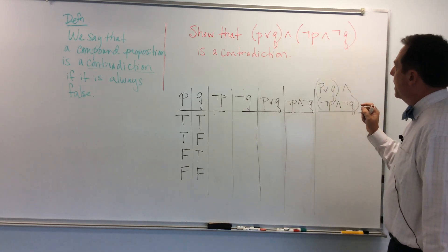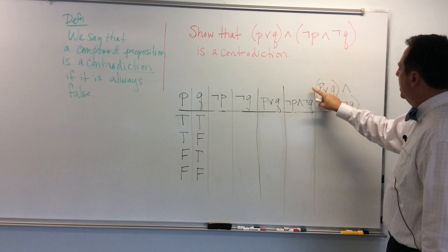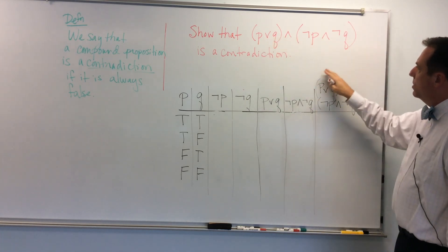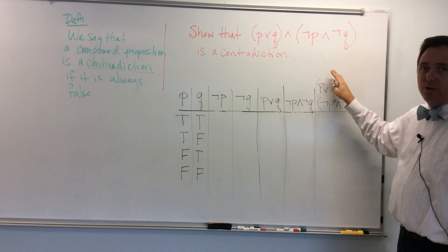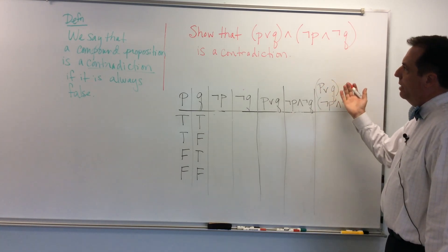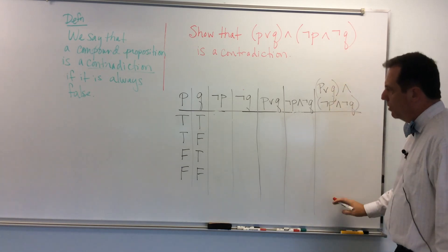Notice that here is the compound proposition we're trying to figure out or trying to show that it's a contradiction. And so it's at the end. And if it is a contradiction, we'll just have all falses going down here.